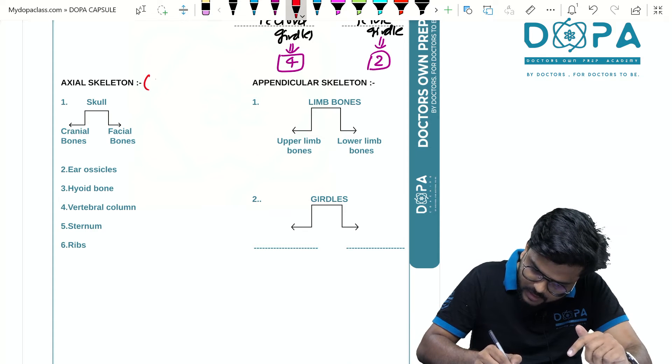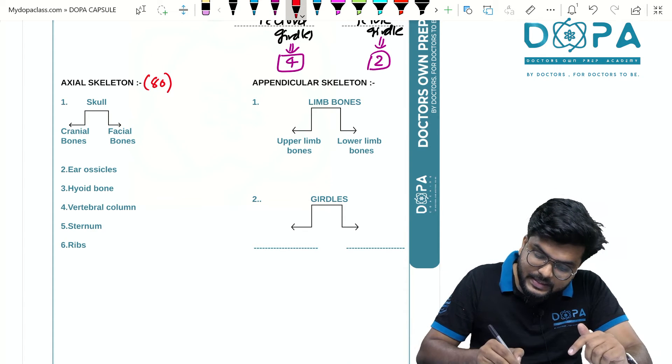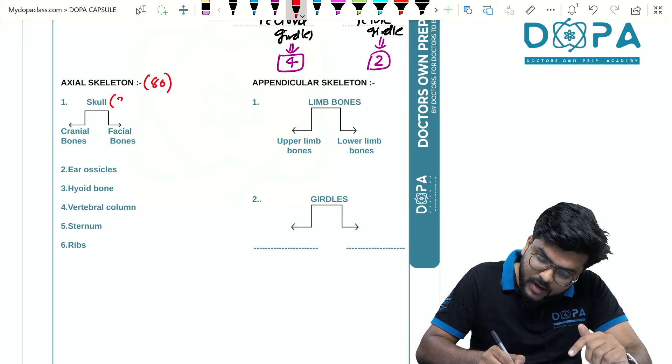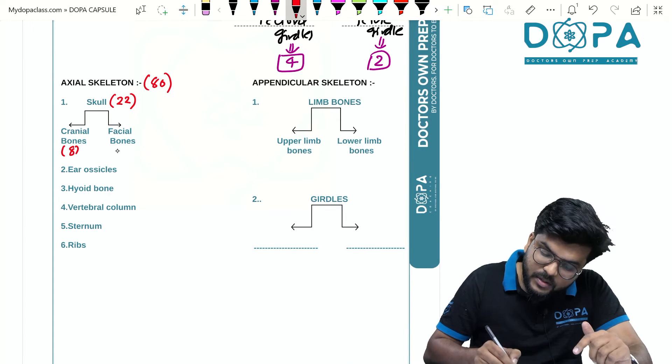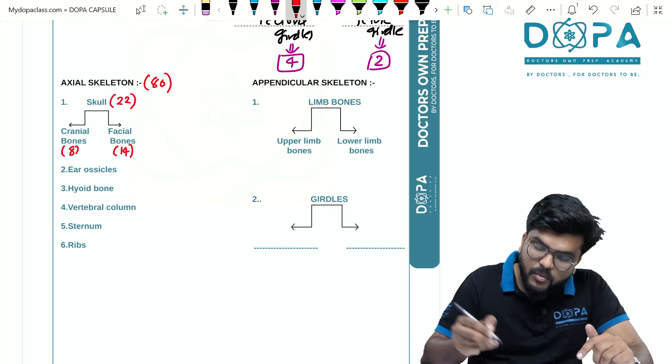In the skull, totally we have 22 bones which is distributed as 8 cranial bones and 14 facial bones. 14 plus 8 equals 22.